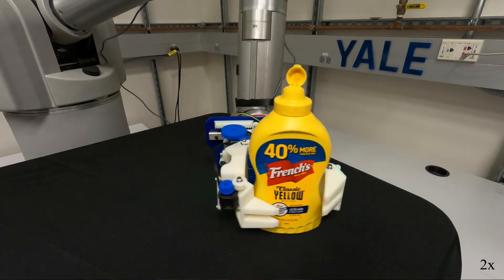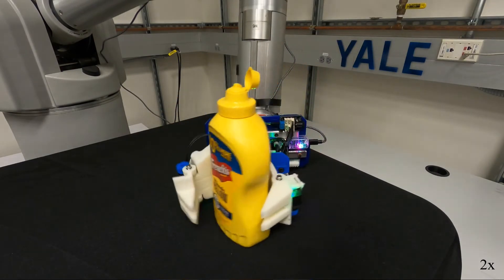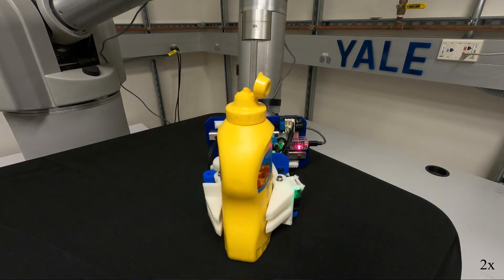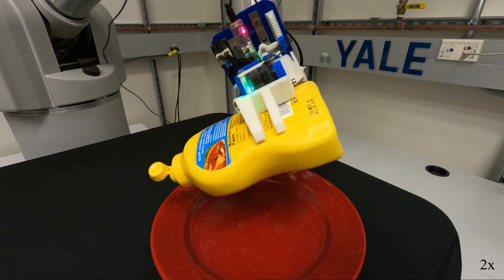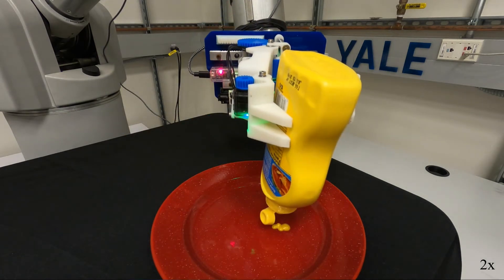We also demonstrate the task of reorienting a mustard bottle prior to grasping, so it can be properly squeezed. Despite the mustard flowing from the bottle, the grasp force of the hand was tested during this task, as it uses inexpensive hobby servos.